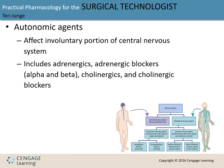Autonomic agents are available in oral and parenteral forms. We're going to talk about four different categories, each being the opposite of the other: adrenergics and adrenergic blockers, and cholinergics and cholinergic blockers.